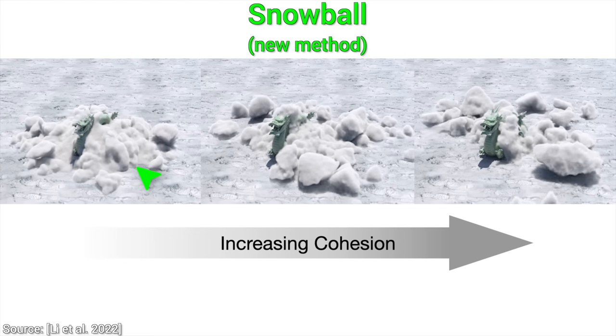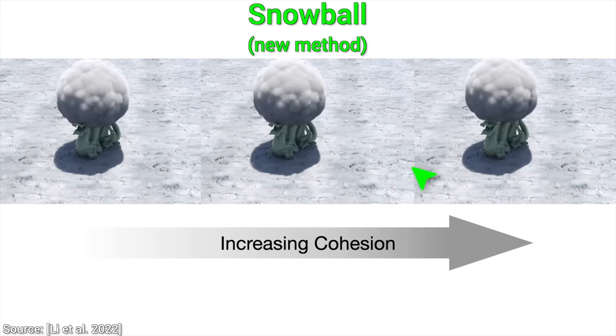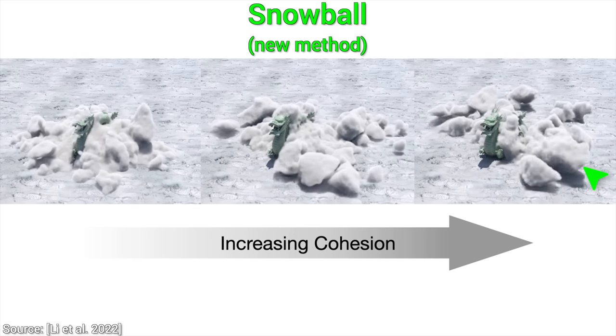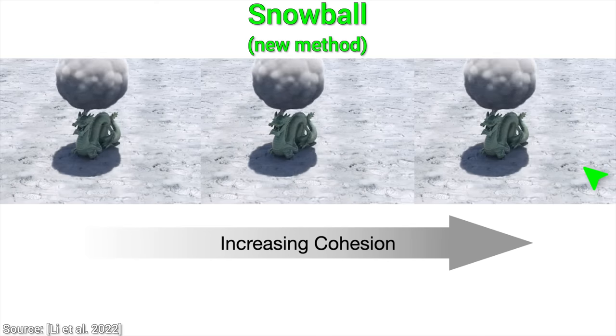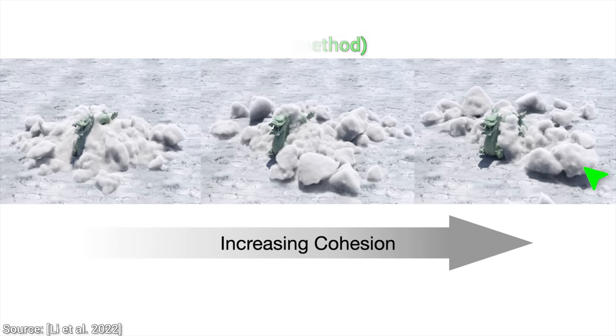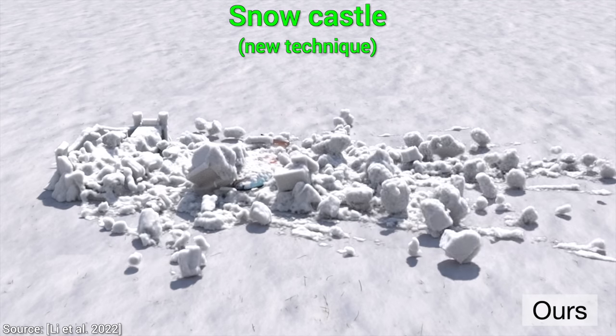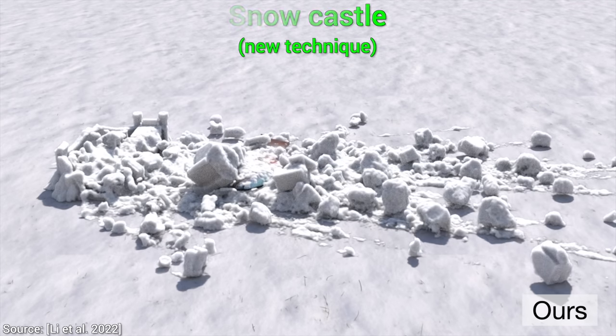we can choose the cohesion physical parameter, and the simulator will create a world where snow gets significantly more chunky. How cool is that? And we are even getting paid for writing algorithms like this and having so much fun! I can't believe it!